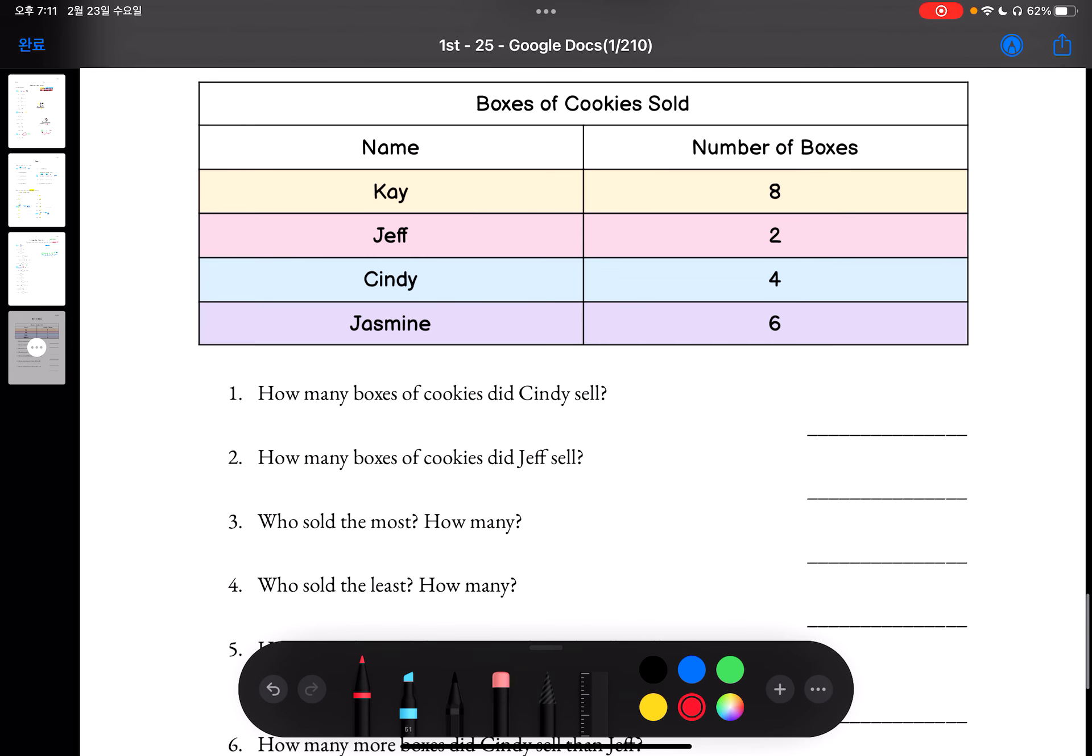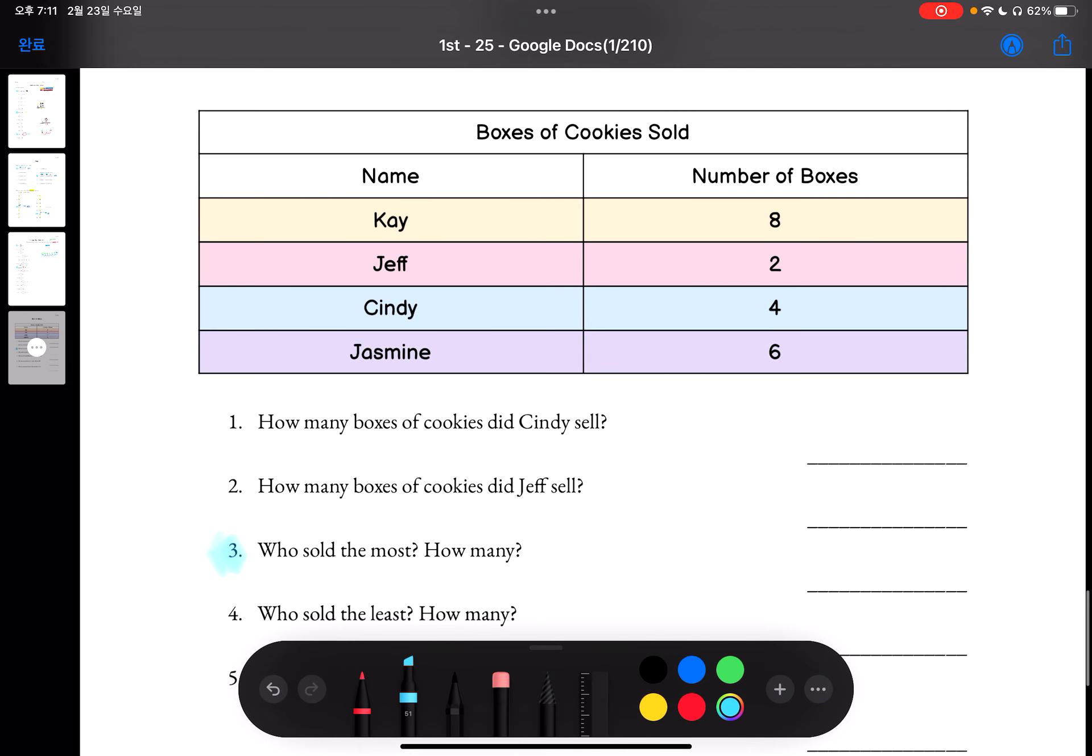Let's look at number 3. Who sold the most boxes of cookies? And by how many? So let's look at the numbers 8, 2, 4, and 6. When we look at these four numbers, we can see right away that 8 is the greatest.